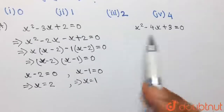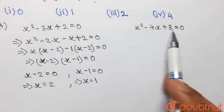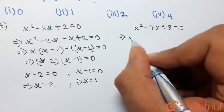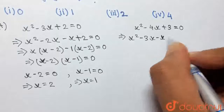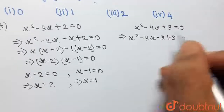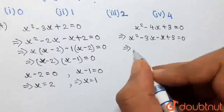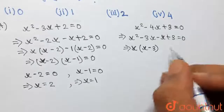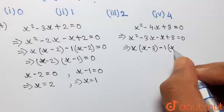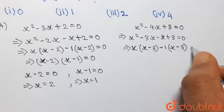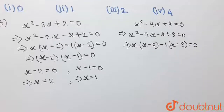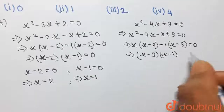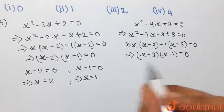Shifting focus to the second equation, x²-4x+3=0, this again is a quadratic equation that can easily be solved by factorization. The left-hand side can be written as x²-3x-x+3=0, as -4x can be written as -3x-x. Taking x common from the first two terms gives x(x-3), and taking -1 common from the next two terms gives -1(x-3), equal to 0. Taking (x-3) common, we have (x-3)(x-1)=0.